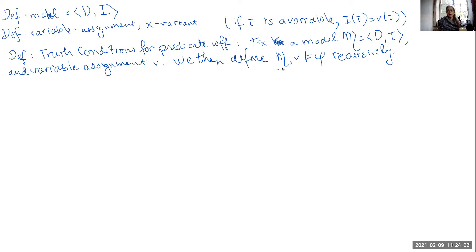This can be read in a variety of ways. We might say that phi is true on the model with the variable assignment, or that model M and variable assignment V is a model of phi, or M V makes phi true. But the important thing is to note that this is the double-turnstile, so this is the semantic notion. We are talking about truth and meaning, not about proof. That will come later.